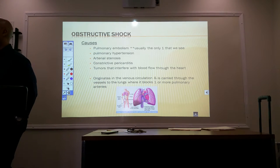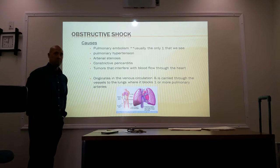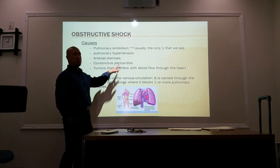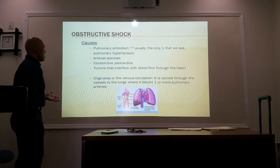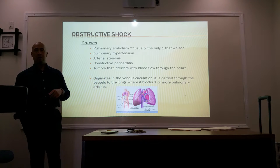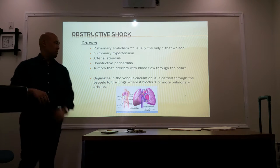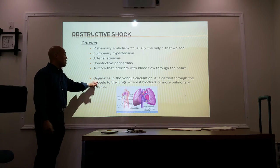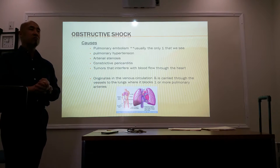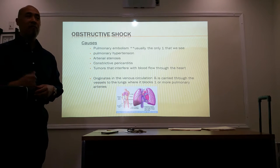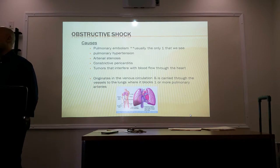The causes of pulmonary embolism may include pulmonary hypertension, arterial stenosis, constrictive pericarditis — which is inflammation around the heart — and tumors that interfere with blood flow through the heart. The embolism originates in the venous circulation and is carried through the vessels to the lungs where it blocks one or more pulmonary arteries, causing a systemic deprivation of oxygen.